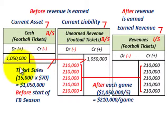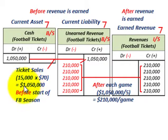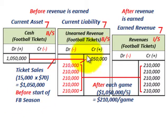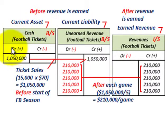So let's look at our example. We have ticket sales: 15,000 season tickets at $70 each, which equals $1,050,000. This is before the start of the football season. What we'd do is credit our unearned revenue account on our balance sheet for $1,050,000. And then the corresponding debit — let's say they were all cash sales — so we would debit cash for $1,050,000.